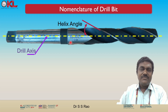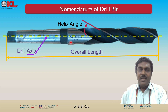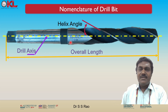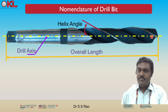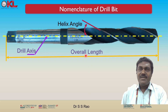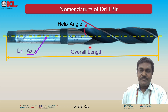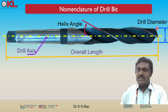The overall length of the drill bit is the total measurement from the tip to the end of the shank. This overall length determines the maximum depth that the drill can penetrate into the workpiece.